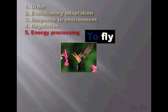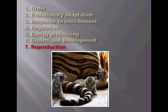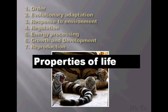In order to control internally and respond externally, a living thing needs to process energy. As life goes on, living things grow and develop. Finally, when it reaches the adult stage, living things are ready to reproduce. So these are the seven categories that make living things living.